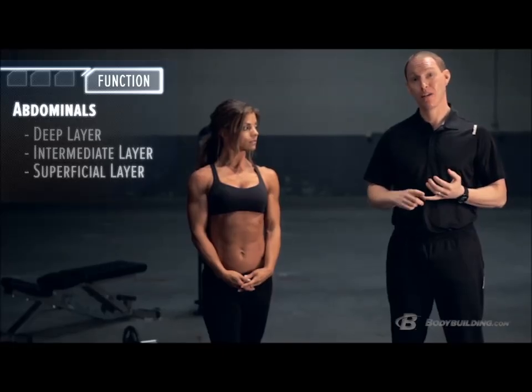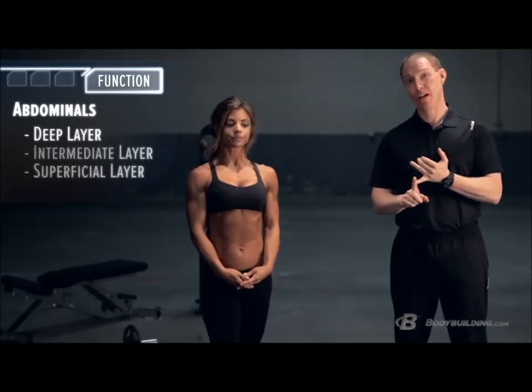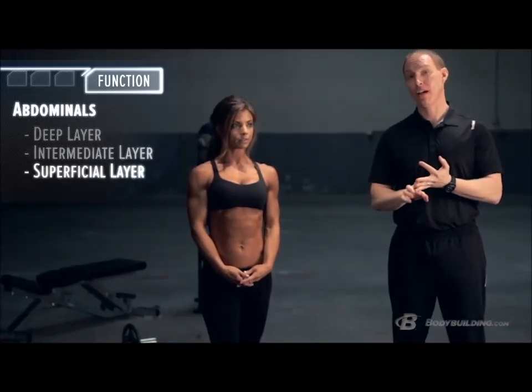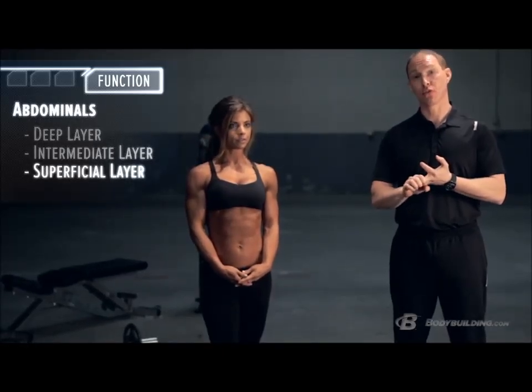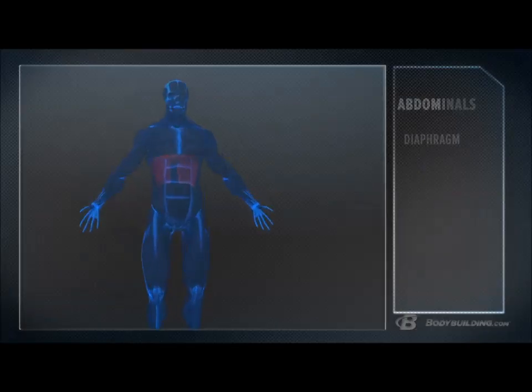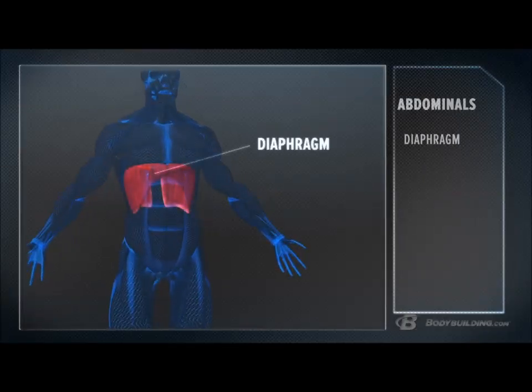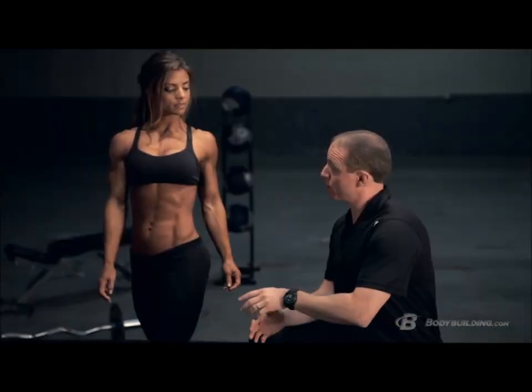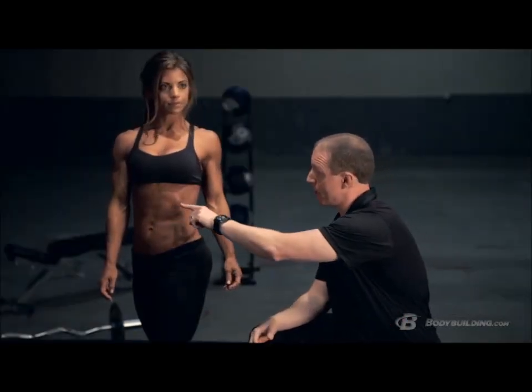that there are three unique subsections to your abs. We're going to work our way from the inside out — you have a deep layer, an intermediate layer, and a superficial layer. The first muscle we're going to talk about is the diaphragm. A lot of people don't talk about the diaphragm, but it's a critical muscle as far as respiration goes.